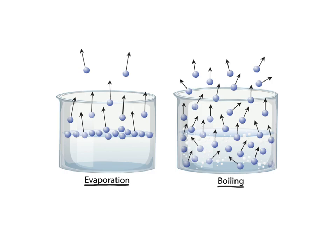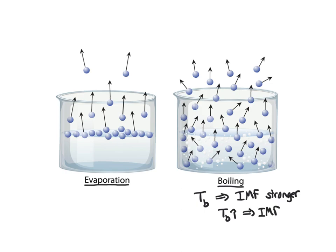The boiling point T_B of a liquid will depend on the intermolecular forces. If the intermolecular forces are stronger, then I need more energy to allow all of the molecules to be able to get away from each other and form little bubbles of gas. So I need a higher temperature for stronger intermolecular forces, meaning the boiling point increases as the intermolecular forces get stronger.